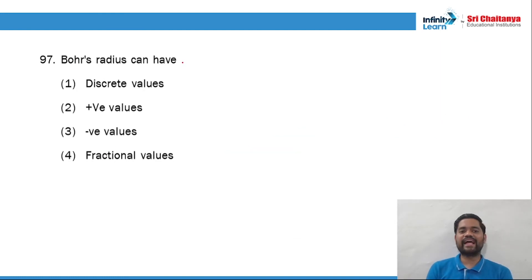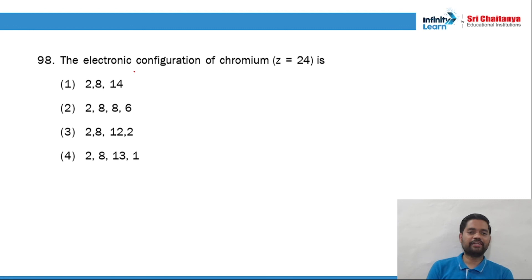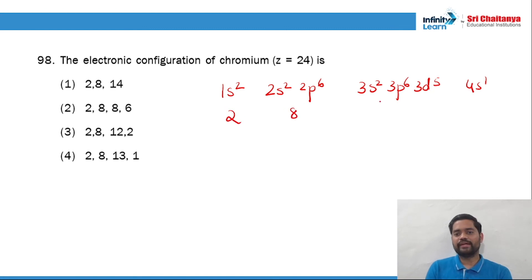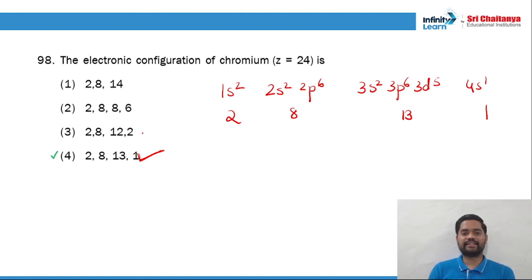Question 97: Bohr radius can have only positive values — yes. Question 98: the electronic configuration of chromium (Z=24). It is 1s², 2s², 2p⁶, 3s², 3p⁶, 3d⁵, 4s¹. That gives: 2, 8, 13, 1. The right option is option number 4.